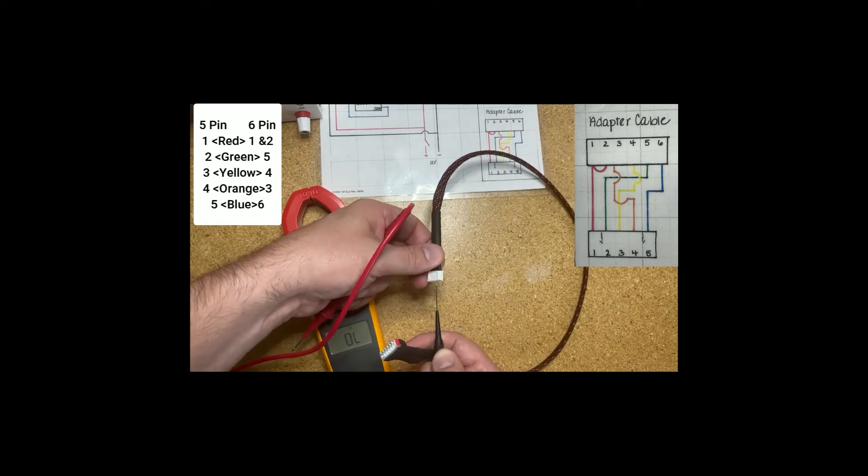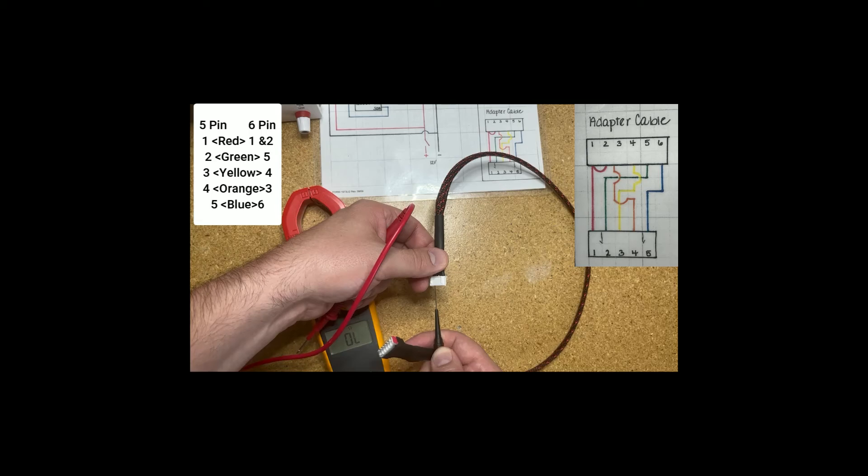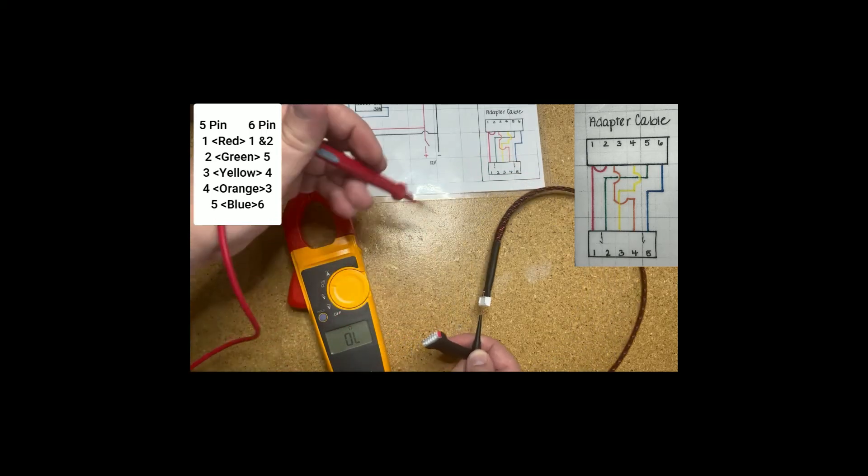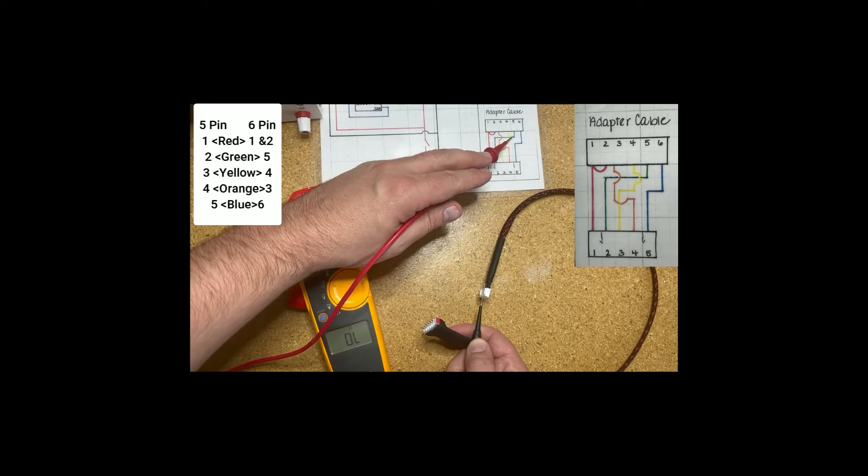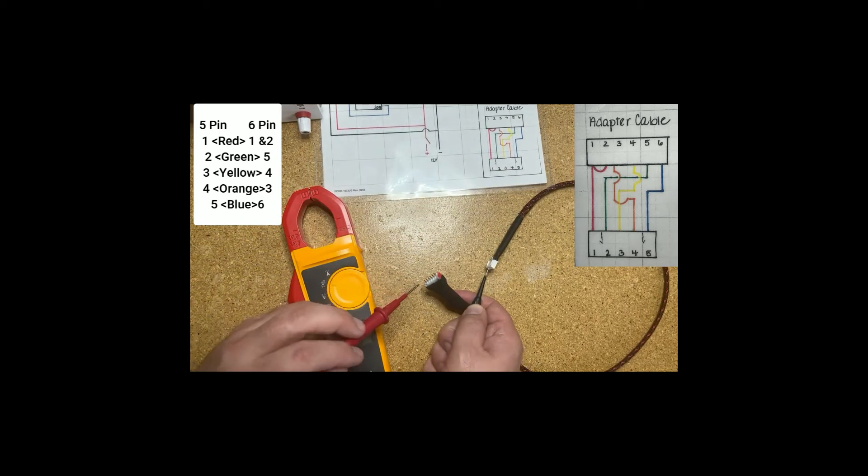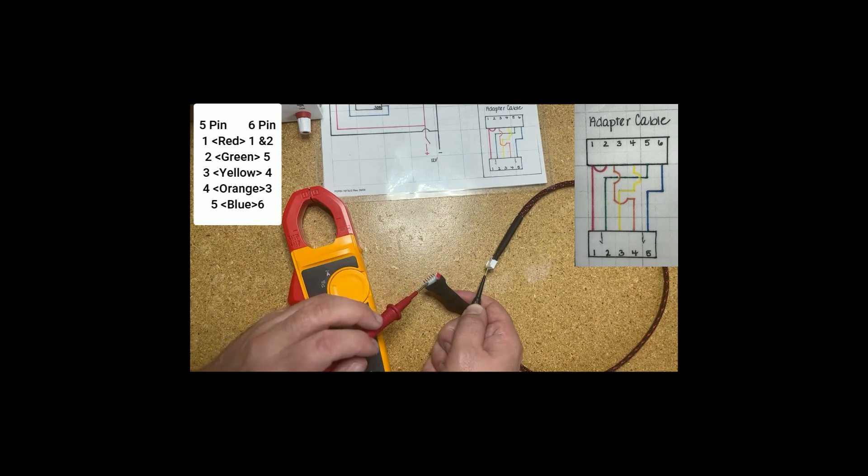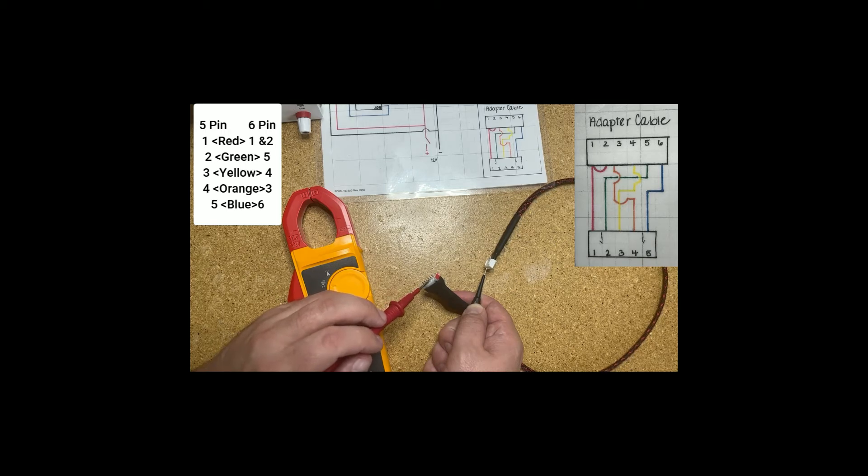Now if I bump over to the next five pin lead or five pin connector it's shown as green here. I can trace that out and that should go to pin five. So that should be this pin here. Continuity. Good. And then nothing else. Check them all to make sure there's no shorts.